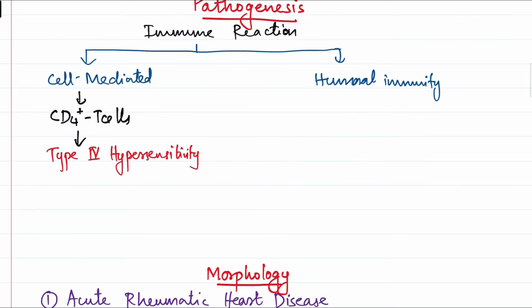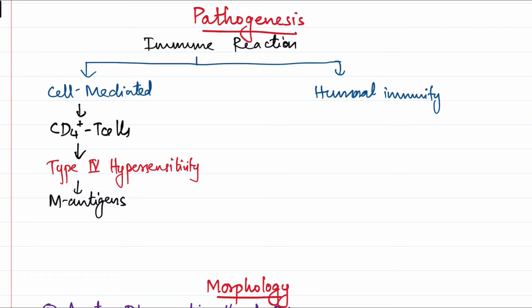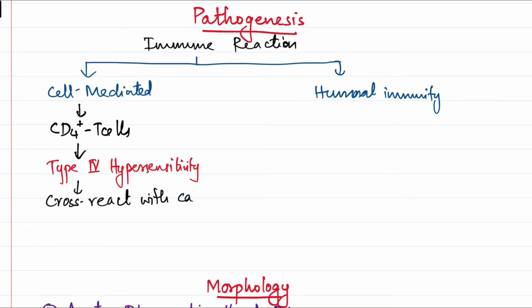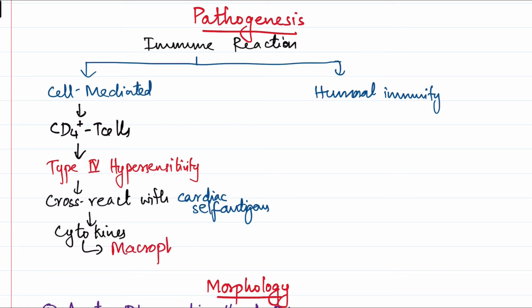The CD4 T cells react against the M antigens of streptococcus. These M antigens are actually similar in structure to the cardiac self-antigens, so there is a cross-reaction — the CD4 T cells also respond against the cardiac self-antigens. As a result, they release cytokines, and these cytokines activate macrophages.